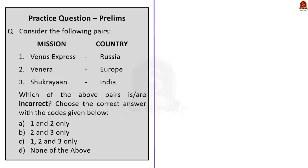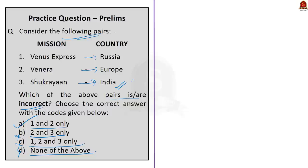Question 2: Consider the following pairs — Venus Express: Russia; Venera: Europe; Shukrayaan: India. Which of the following pairs are incorrect? Options are: A) 1 and 2 only, B) 2 and 3 only, C) 1, 2 and 3, D) none of the above. The correct answer is option A — 1 and 2 only. We know Shukrayaan is India's mission to Venus, to be launched by ISRO before December 2024, so pair 3 is correct. Venus Express is a mission of the European Space Agency, and the Venera series is a series of unmanned Soviet planetary probes sent to Venus — so pairs 1 and 2 are both wrong and interchanged.